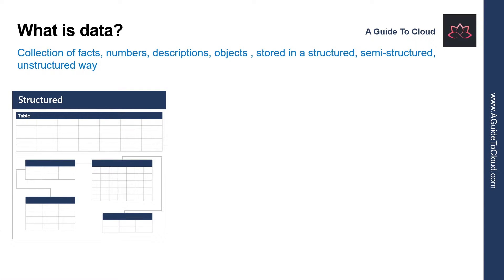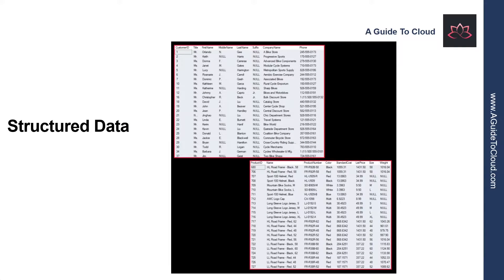Structured data is typically tabular data that is represented by rows and columns in a database. Databases that hold tables in this form are called relational databases. The mathematical term relation refers to an organized set of data held as a table. Each row in a table has the same set of columns. This image illustrates an example showing two tables in an e-commerce database — the first contains customer details, and the second holds information about products the organization sells.